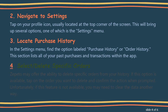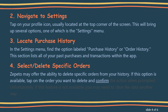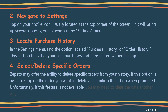Step 4: Select or Delete Specific Orders. Zepetto may offer the ability to delete specific orders from your history. If this option is available, tap on the order you want to delete and confirm the action when prompted. Unfortunately, if this feature is not available, you may need to clear the data another way.